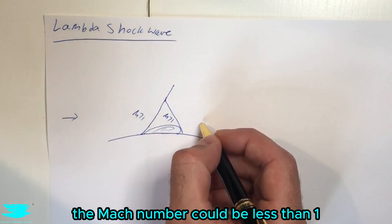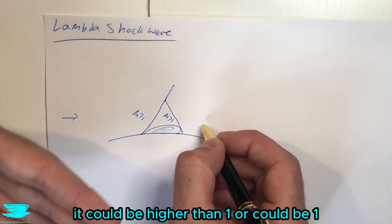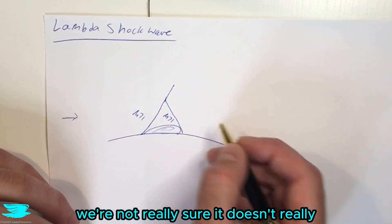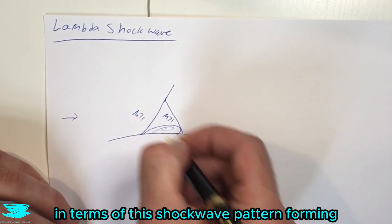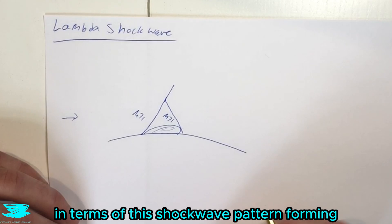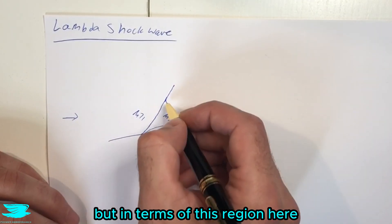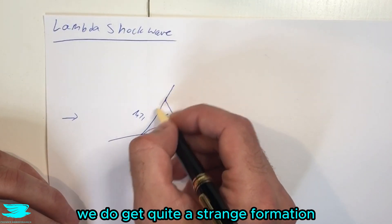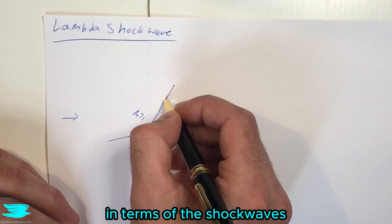Downstream with this region, the Mach number could be less than 1, it could be higher than 1, or it could be 1. We're not really sure, it doesn't make too much of a difference here in terms of this shockwave pattern forming. But in terms of this region here, we do get quite a strange formation in terms of these shockwaves meeting here.